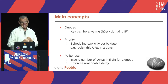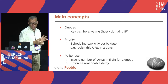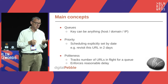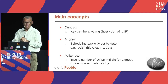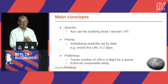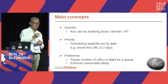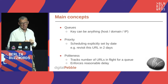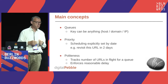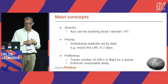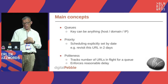The main concepts with URL Frontier are that URLs are organized into queues, and each queue has a key — typically the hostname, domain, or IP address. Within the queue, URLs have a priority, which is like a scheduling date — when you want that URL to be fetchable by a crawler. For instance, you could tell it a URL needs to be revisited in two days if there's been an HTTP error, and reschedule it in the future. URLs within the queue are sorted this way.